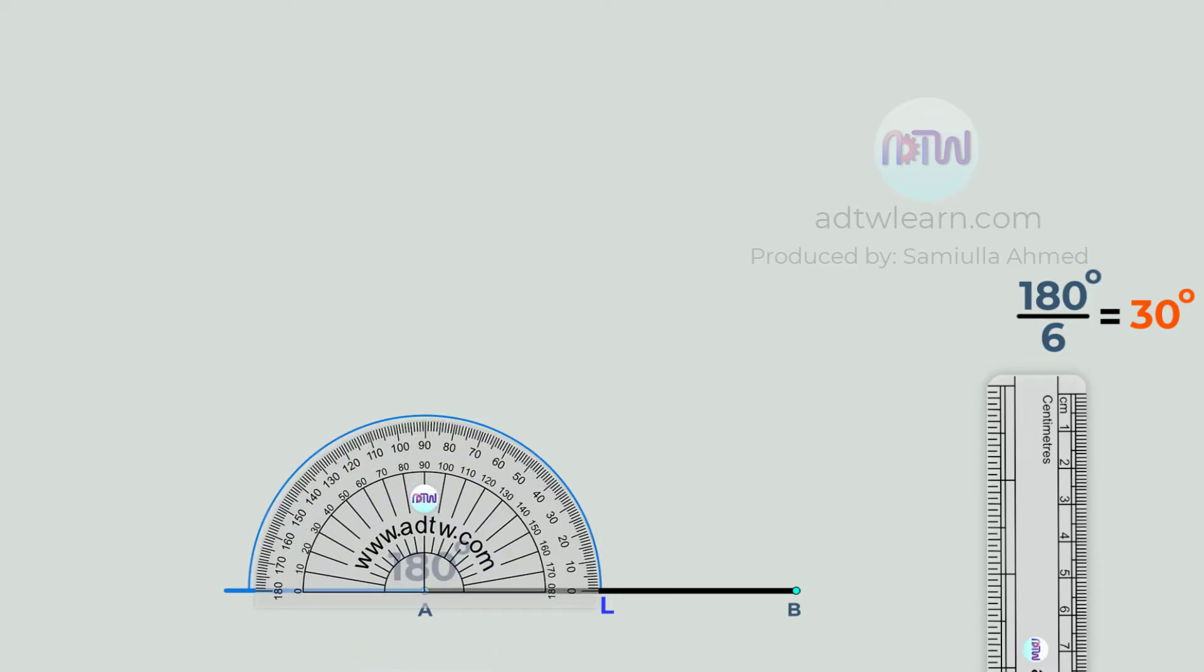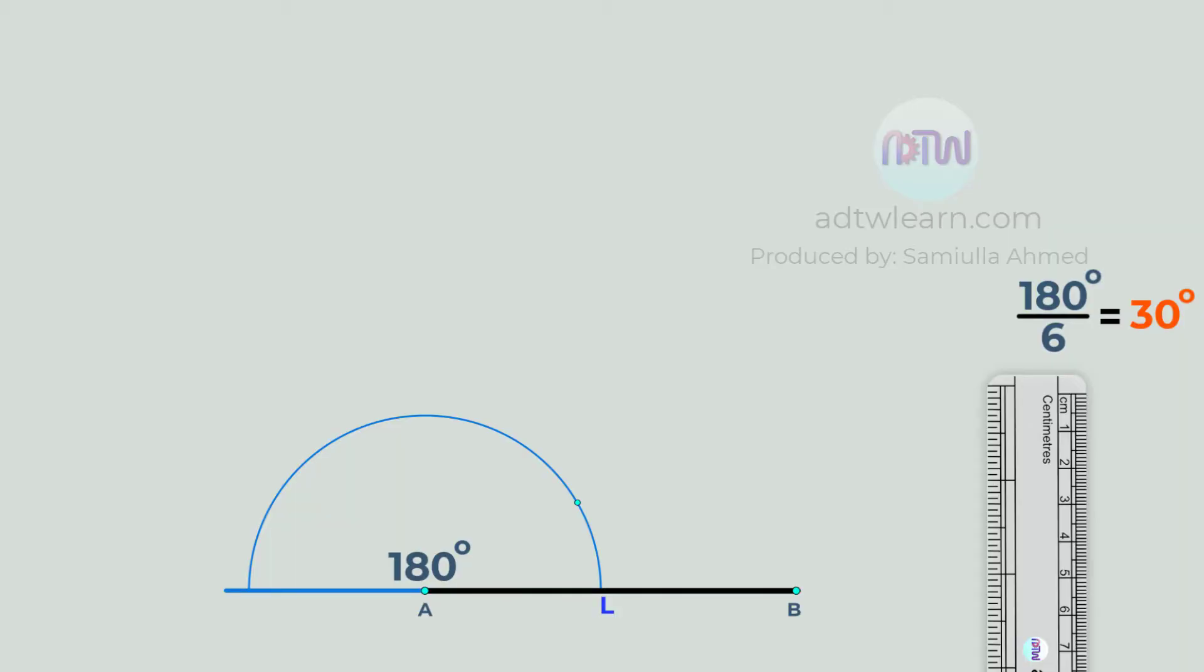Next, take a compass and adjust it to this length and divide this arc into six equal parts.